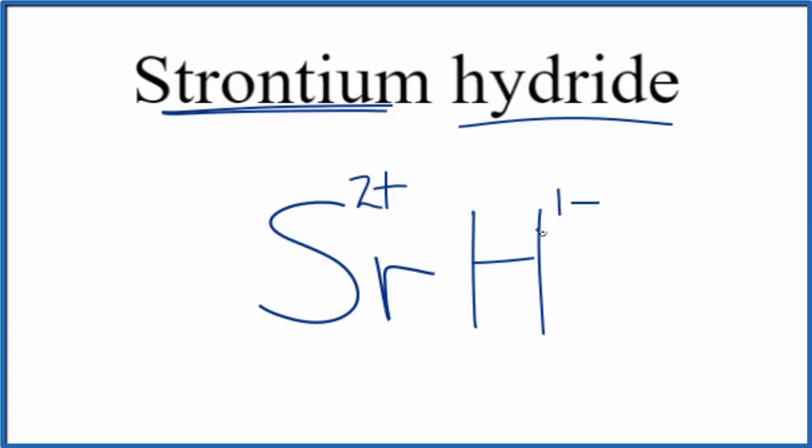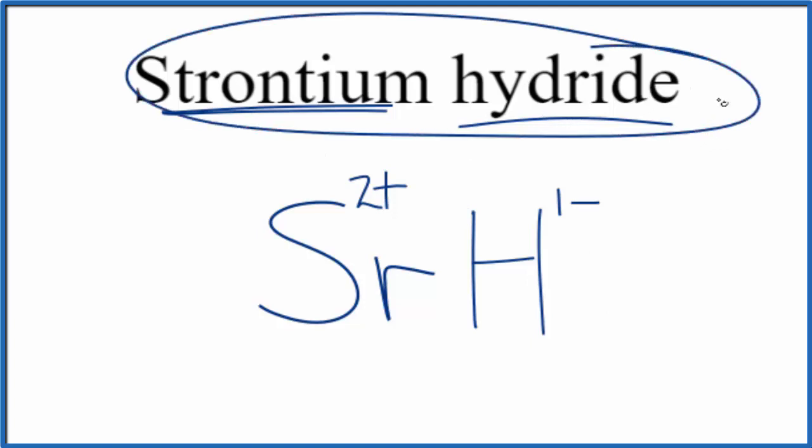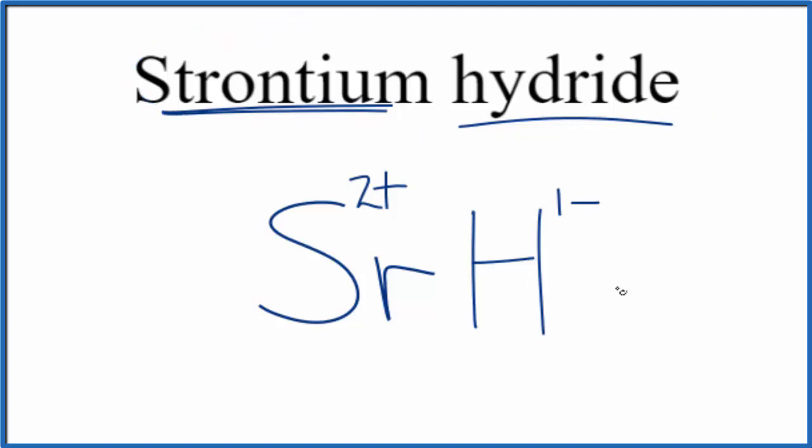So in this case, if we want this all to add up to 0, since strontium hydride is a neutral compound, it doesn't say ion after it, we're going to need to have 2 of these hydride ions. 2 times 1 minus would give us 2 minus, then that would balance out the 2 plus.